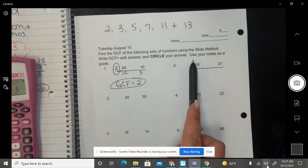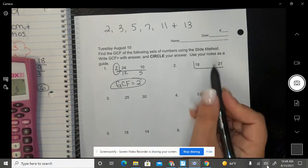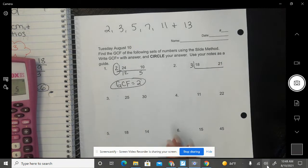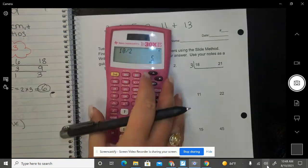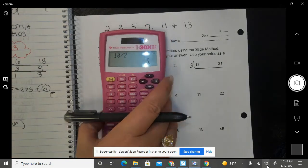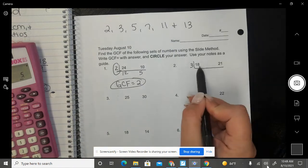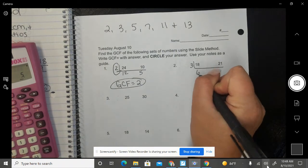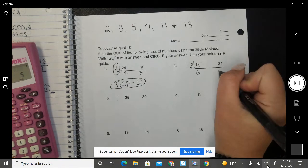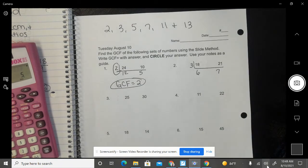Is 3 a factor of 18? Yes. So I'm going to put 3 on the outside. If I didn't know, like I said, you can go back and you could divide it out on your calculator. So 18 divided by 3 is 6. 21 divided by 3 is 7.